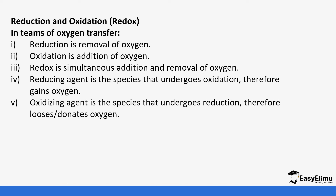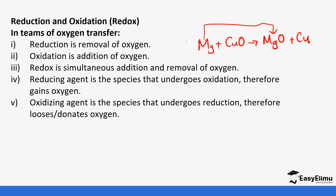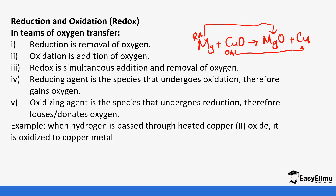For example, take magnesium reacting with copper oxide to form magnesium oxide plus copper. In this case, magnesium undergoes addition of oxygen, so it is undergoing oxidation, and although it is the one doing the taking, it is the reducing agent. Copper oxide is undergoing reduction but it is the one donating oxygen, so it is the oxidizing agent. When hydrogen is passed through heated copper(II) oxide, it is oxidized to copper metal.